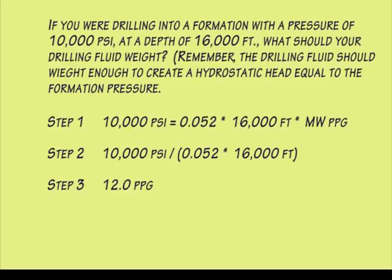Okay, let's solve this problem. Step one: we write the equation — 10,000 pounds per square inch, which is the formation pressure, equals .052, the constant, times the true vertical depth of our well, which is 16,000 feet, times the mud weight in pounds per gallon. The missing variable is the mud weight in pounds per gallon.